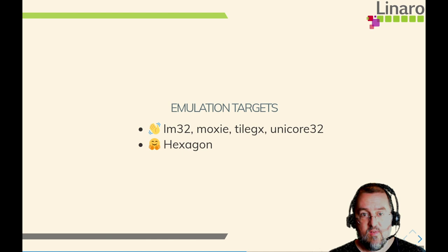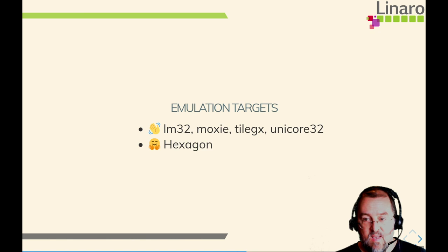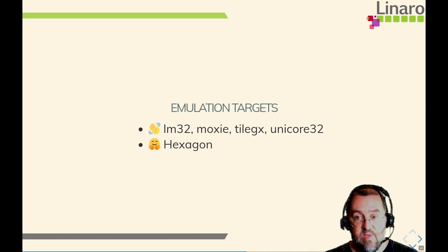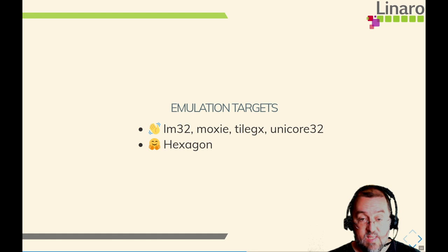Aside from virtualization, QEMU is quite popular as an emulator. This year we said goodbye to a number of targets: LM32, Moxi, TileGX, and Unicore32. Not many people were using these architectures; some had been deprecated from Linux, and it was getting increasingly hard to find binaries and tool chains to build tests. However, we did say hello to a new architecture: the Hexagon DSP architecture from Qualcomm, which was added in the last year.